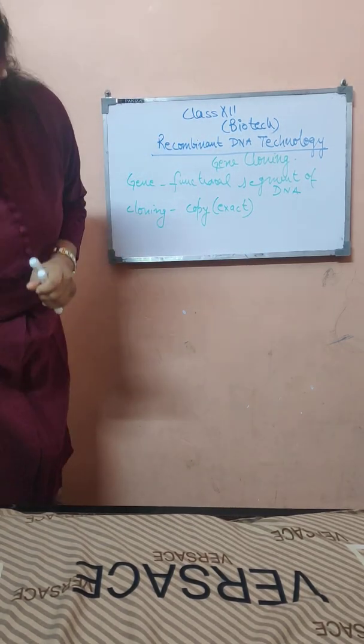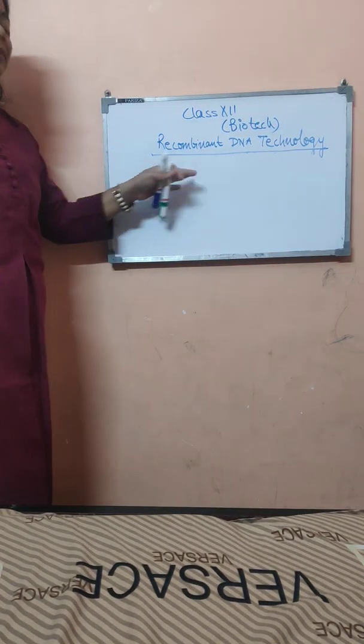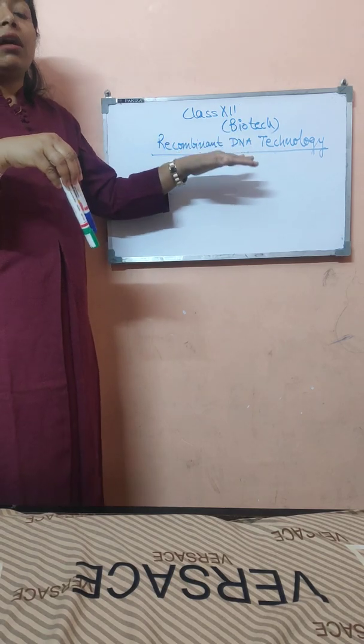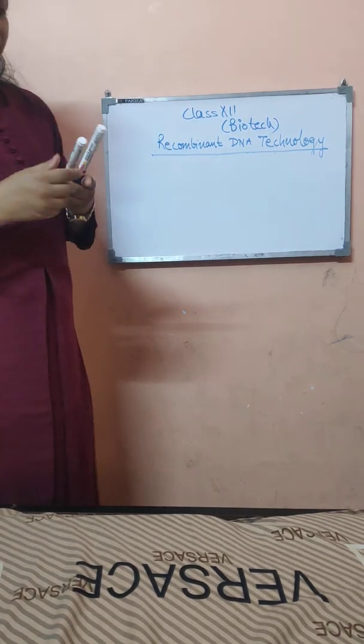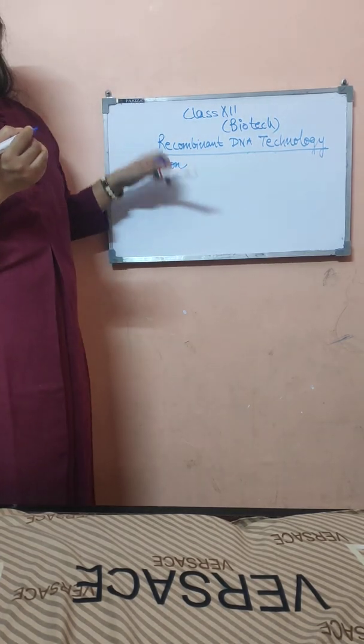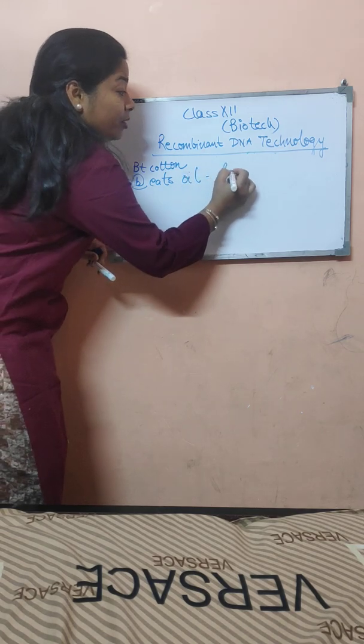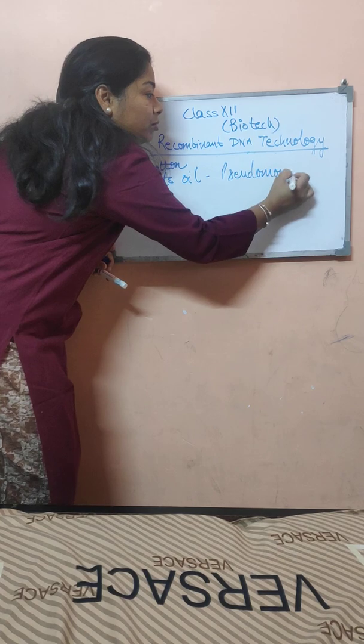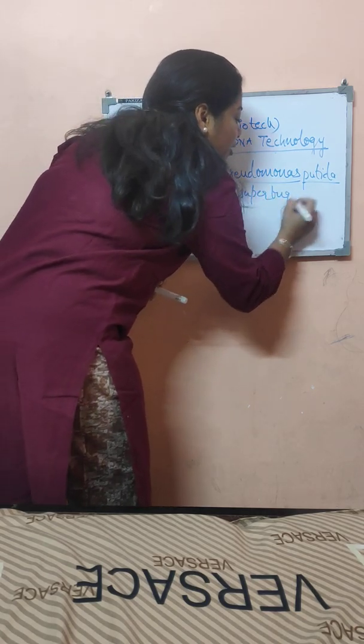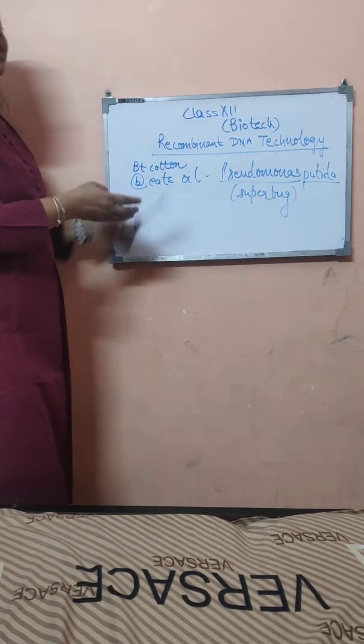So now we will move to the steps of this recombinant DNA technology. And before moving to the steps, we should revise what we have nowadays as a result of recombinant DNA technology. Have you remembered that Bt cotton? Yes, Bt cotton, which is an insect resistant plant, or the bacteria that eats oil, Pseudomonas. We have also engineered it to form a super bug that will clear the oil. And these are few of the resultants of recombinant DNA technology.